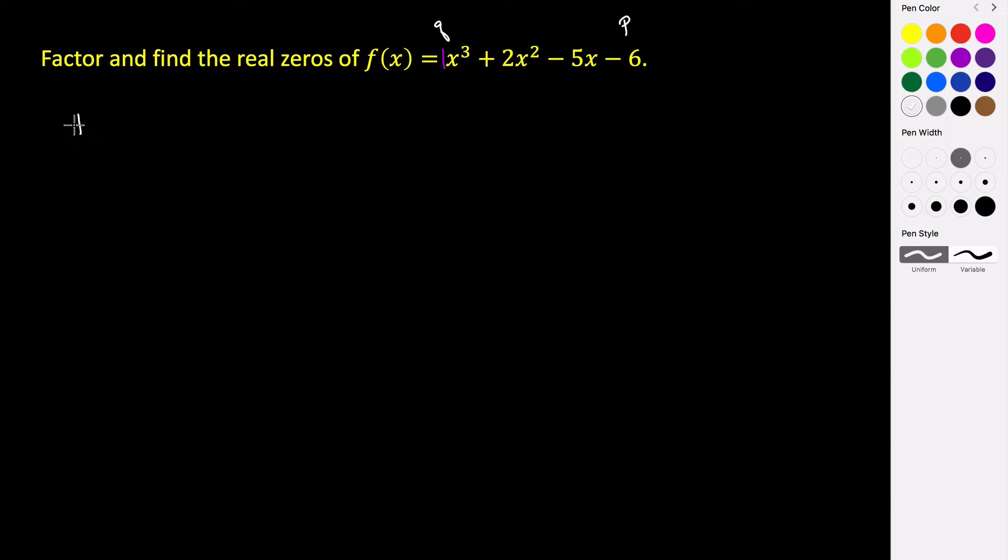Looking at all of the factors of p, factors of six are plus or minus one, two, three, and six. All of our factors of one are just plus or minus one. To do the rational zeros theorem we have to look at the quotient of p divided by q. So we take all of our factors of p and divide them by q. But anytime you divide anything by one you're just going to get itself. So really it's just plus or minus one, plus or minus two, plus or minus three, and plus or minus six. So these are the potential rational zeros.